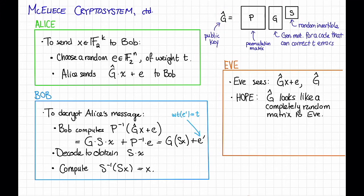Given that hope, the second hope we have is that decoding a random linear code is hard, computationally hard.